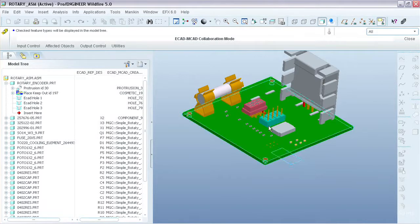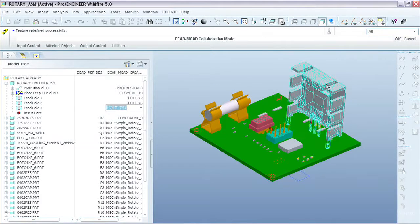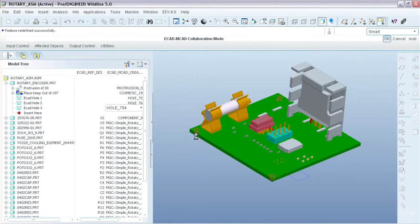PTC extended the interoperability allowing the ECAD and MCAD to exchange baseline information as well as collaborate on objects which traditionally have not had object IDs, such as holes, areas and mechanical components.